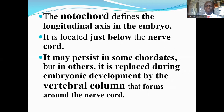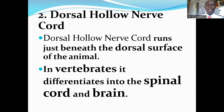The second major feature of chordates is the dorsal hollow nerve cord. The dorsal hollow nerve cord runs just beneath the dorsal surface of the animal. In vertebrates, the dorsal hollow nerve cord differentiates into the spinal cord and the brain.